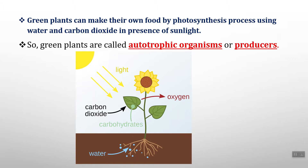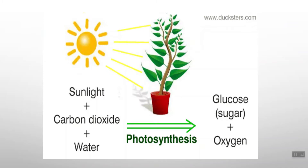Green plants are called autotrophic organisms or producers because they can make their own food using carbon dioxide, sunlight, and water through a process called photosynthesis.